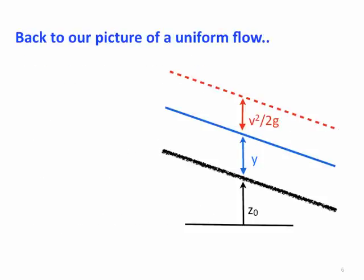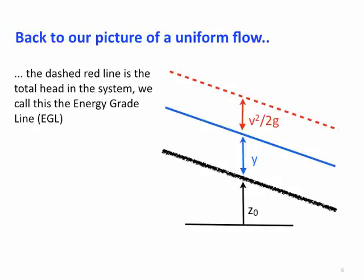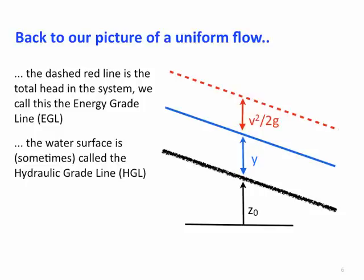Let's go back to our picture of a uniform flow in an open channel. The dashed red line is the total head of the system, and we'll call this the energy grade line. The water surface, our blue line, is sometimes called the hydraulic grade line. This term is more important when we're dealing with piping, but is used often in open channel flow.